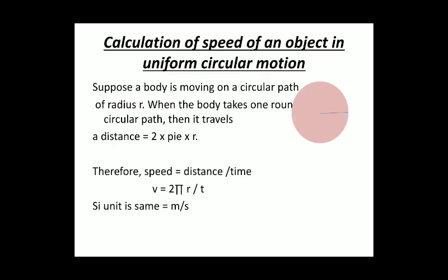Now, for the formulation, calculation of speed of an object in uniform circular motion. When an object is moving on a circular path, obviously that circular path is having some radius R. So if the body takes one complete round, what will be the distance? That is equal to the circumference and that is equal to 2πR. Let the time taken be T. So what is the speed in this case? I am not using the word velocity. Why? Here, velocity refers to the change in direction only. So speed is equal to distance upon time. That is 2πR upon T. And SI unit will be the same as in the case of linear motion, that is meter per second.